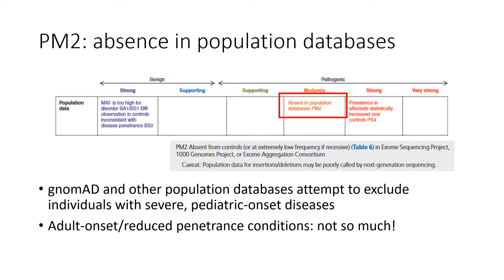In the 2015 ACMG-AMP guidelines, the moderate criteria PM2 is defined as applicable to variants that are absent in the population databases most widely used at the time of that publication: 1000 Genomes, the Exome Sequencing Project or ESP, and the Exome Aggregation Consortium or ExAC, now known as gnomAD.